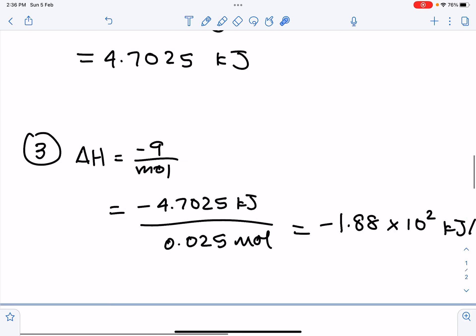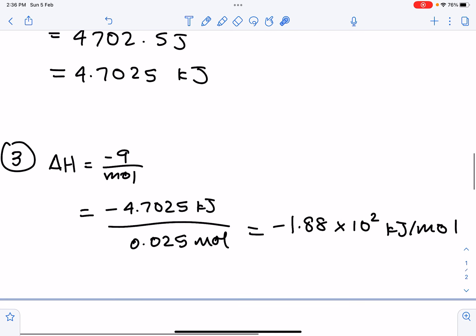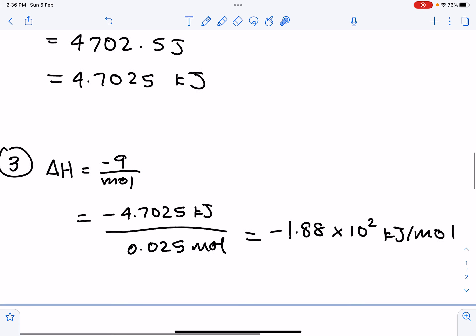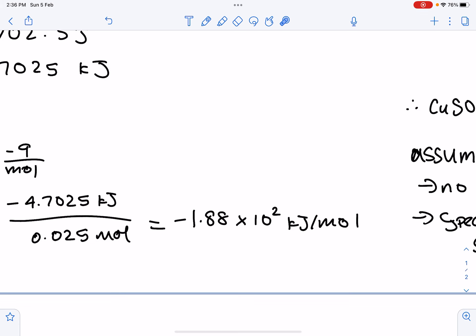So, now, our third step is going to be to calculate, to put the two steps together and calculate enthalpy change. So, the reaction equation, as I mentioned, is delta H equals negative Q over moles. So, negative 4.7025 kilojoules divided by 0.025 moles. And that will give us negative 1.88 times 10 to the power of 2 kilojoules per mole. And that is our enthalpy change.